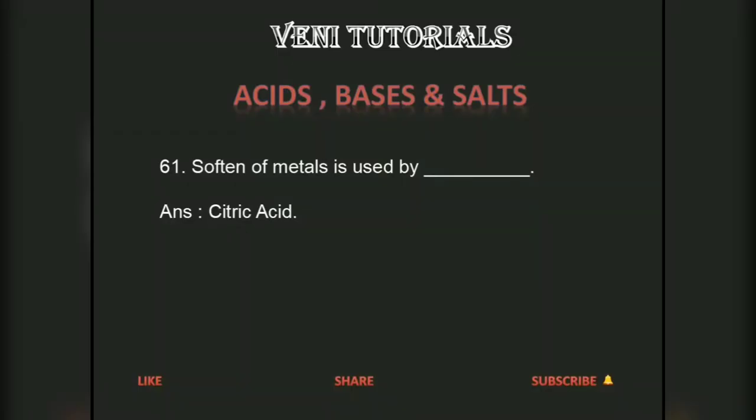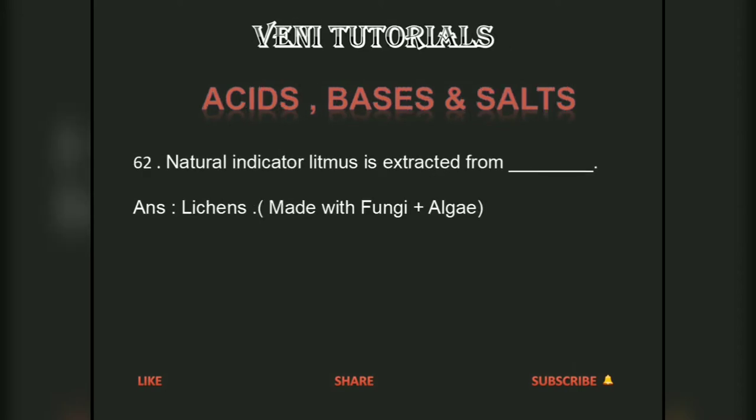Softening of metals is used by citric acid. Natural indicator litmus is extracted from lichens, which are made with fungi plus algae.